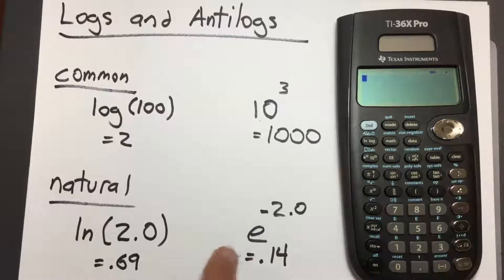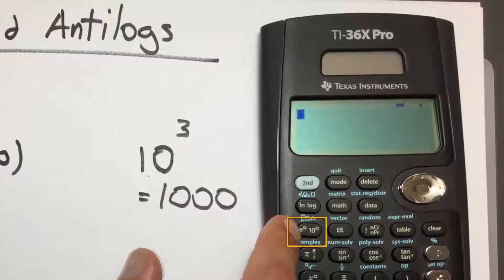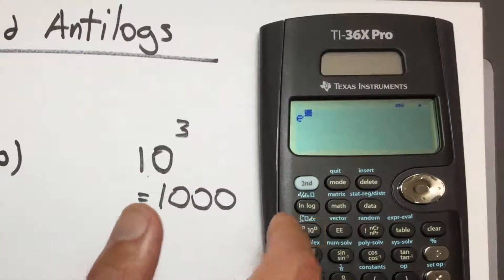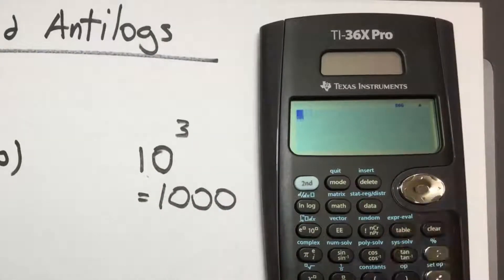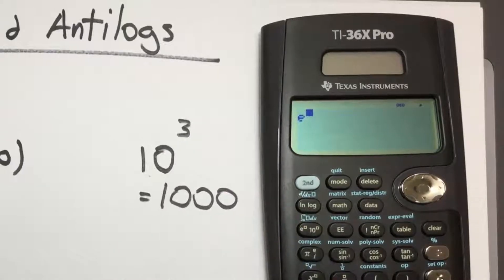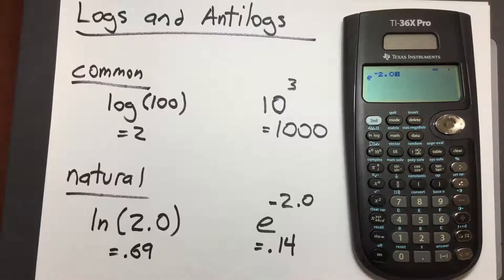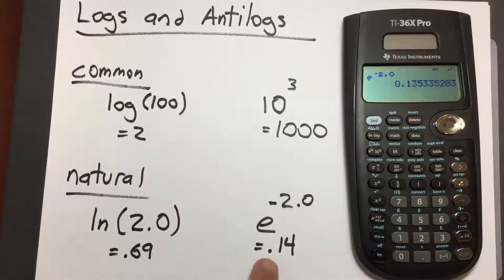Clear the screen one more time. To take the anti-log of the natural log, go to the exponential key. If we press it once, we get lowercase e. Press it twice and we would have gotten 10 as the base instead. Press the exponential key once for lowercase e, enter negative 2.0, and press enter. We get 0.135, which we round up to 0.14.